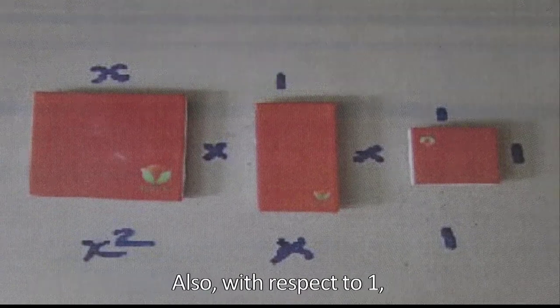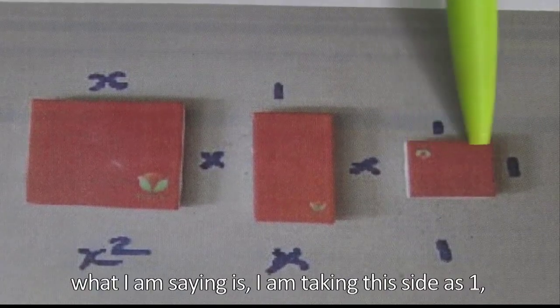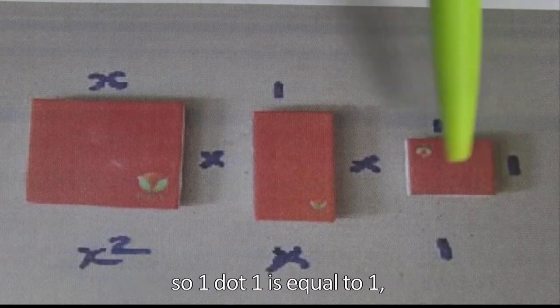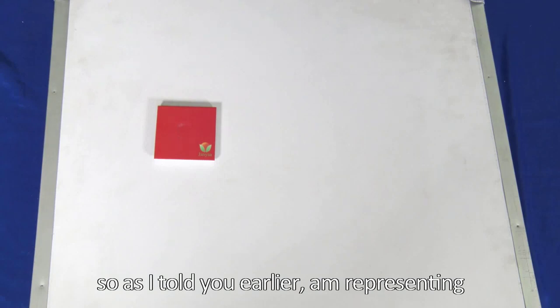And then this length, let's assume it's 1. Also, with respect to 1, I am taking this side as 1 and this side as 1 as well. So 1 times 1 is equal to 1, so I am representing 1 by this square. So let us take this expression x square.